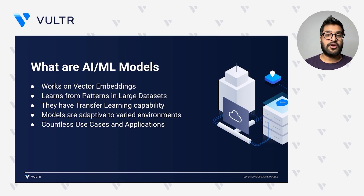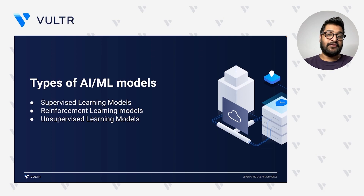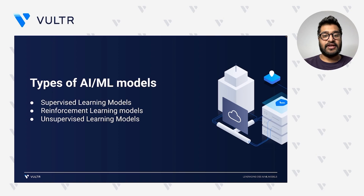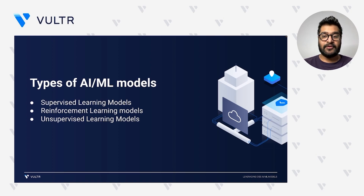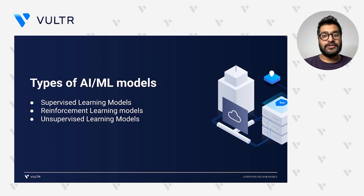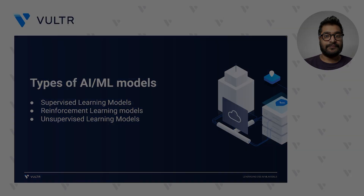Now let's understand various types of AI/ML models. First, we have supervised learning models — it is like teaching with clear examples, for instance showing pictures of cats and dogs and telling the computer which is which. Second, we have reinforcement learning models — it is like playing a game in which the computer tries to learn by trying out different moves and getting rewarded for the good ones. And lastly, we have unsupervised learning models, which is like finding groups of similar things without being told what they are.